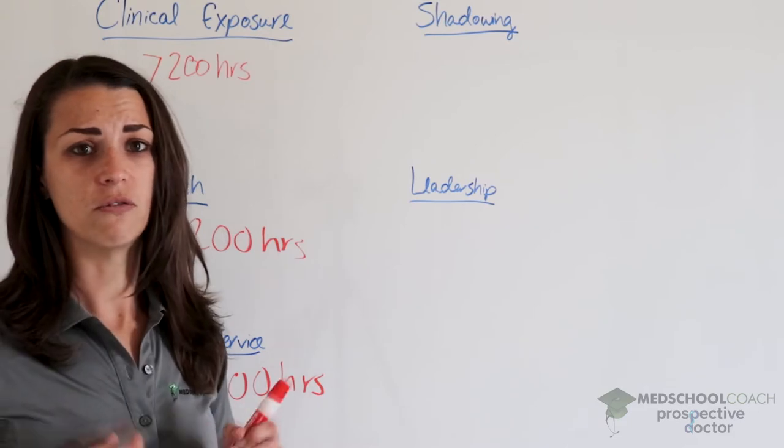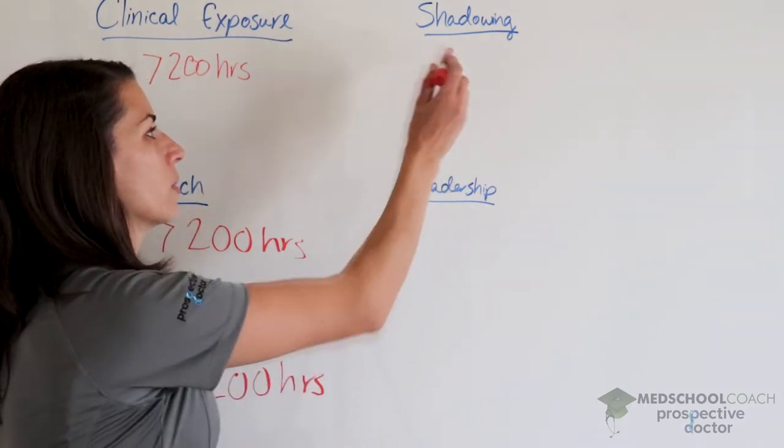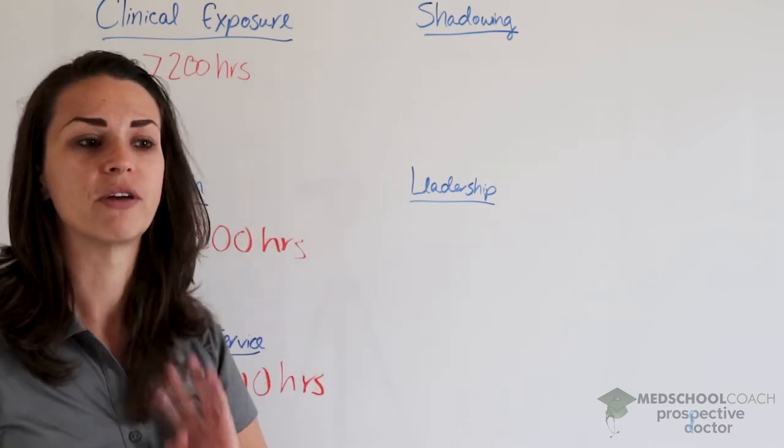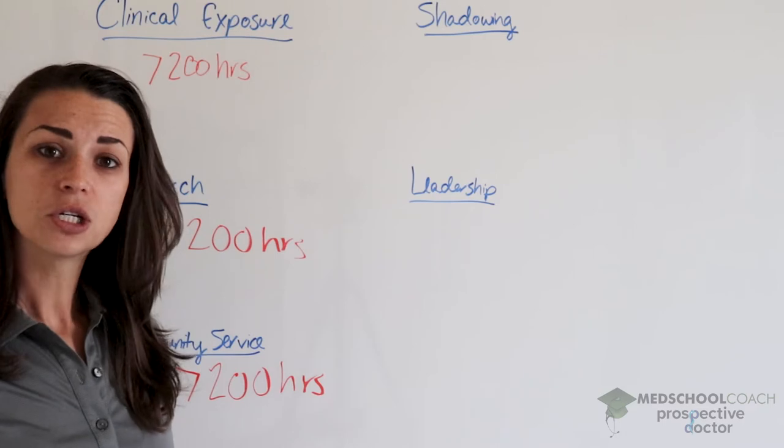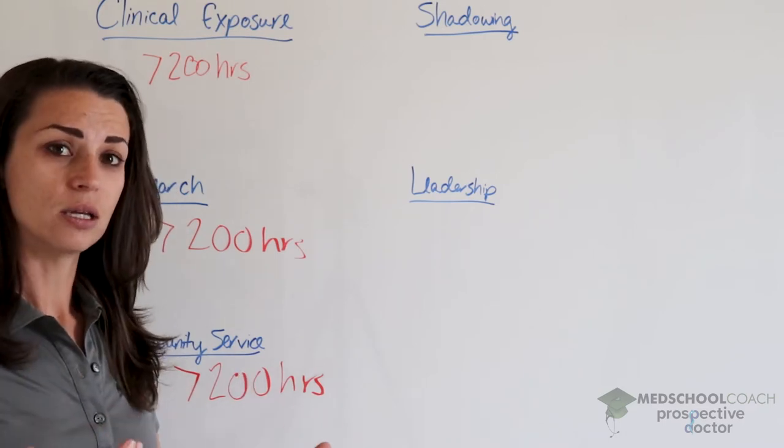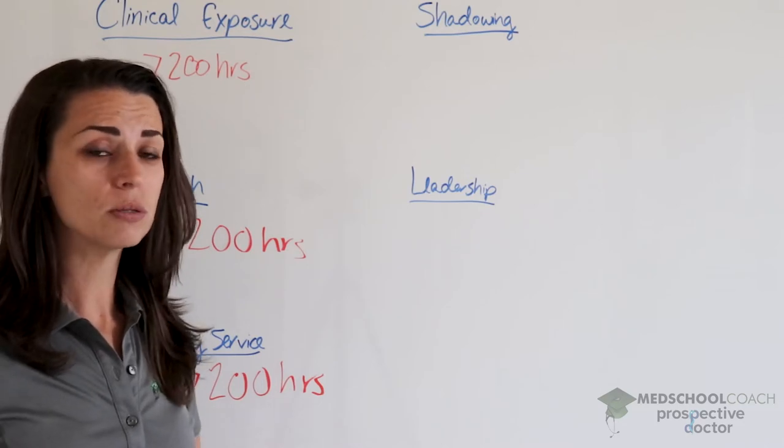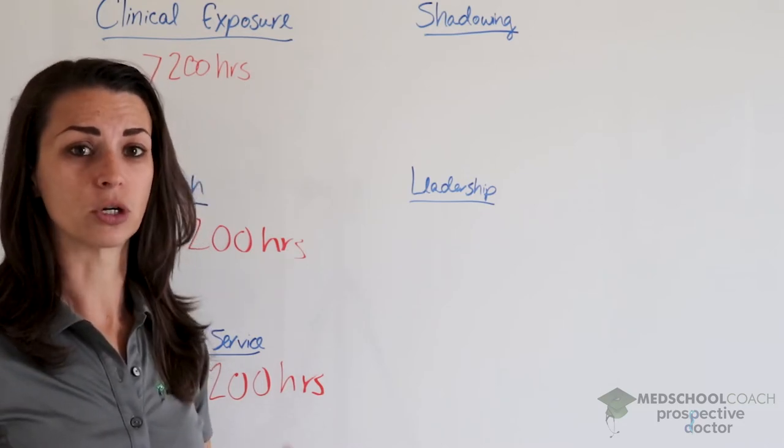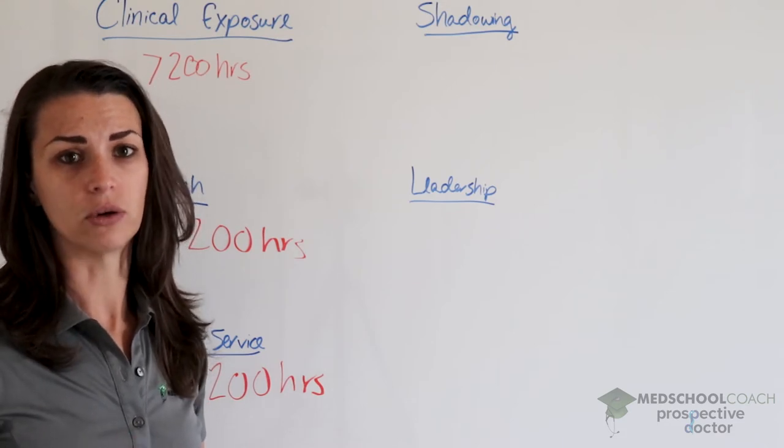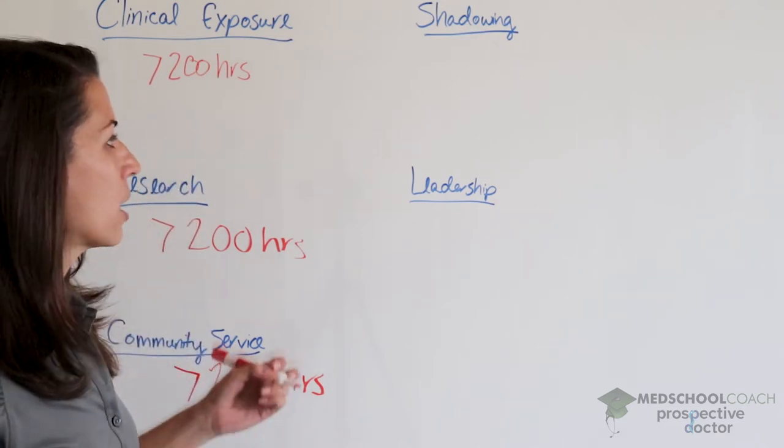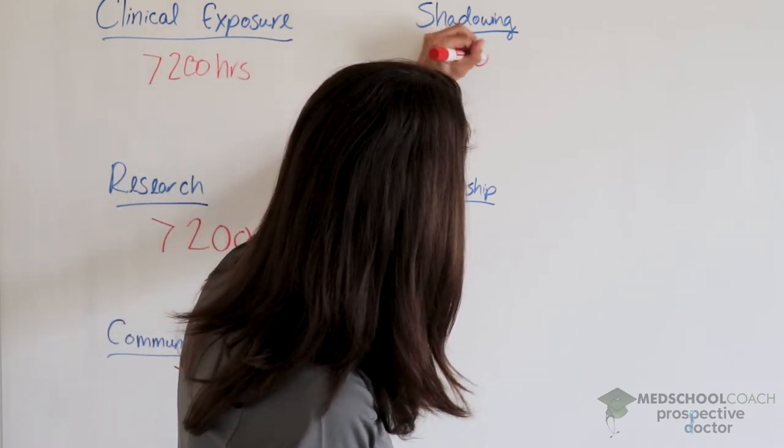Again, this should be something you develop and work on over a long period of time. Shadowing - now we break away from that 200 rule. Shadowing is physician shadowing, and ideally this should be a U.S. medical physician. You can do some shadowing internationally and that looks great, but you should also have some shadowing in the U.S. For shadowing, I usually recommend somewhere greater than 50 hours.